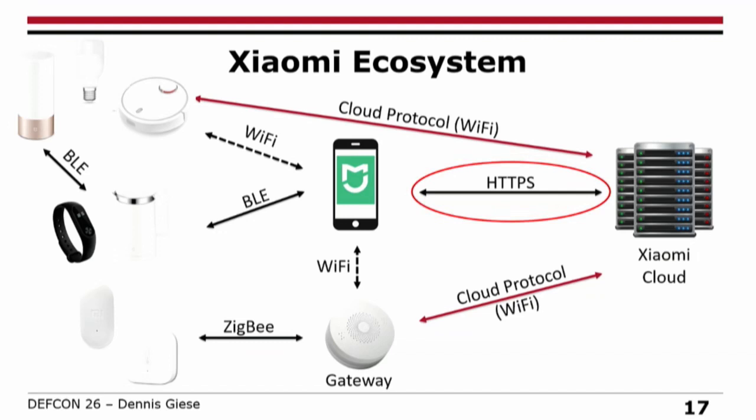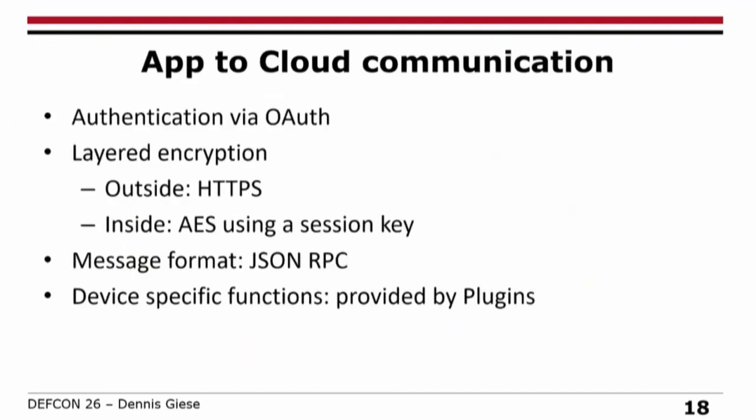Let's look at the other interface — between the app and the cloud. The communication is authenticated over OAuth with layered encryption: they connect over HTTPS, but inside the HTTPS they have a payload encrypted with AES and a specific generated session key. The message format is JSON-RPC. Interestingly, the home app doesn't have all the functionality for the devices — the app downloads plugins automatically. As soon as you add a new device to your app, it downloads a new plugin in the background, and the functionality is provided by those plugins.